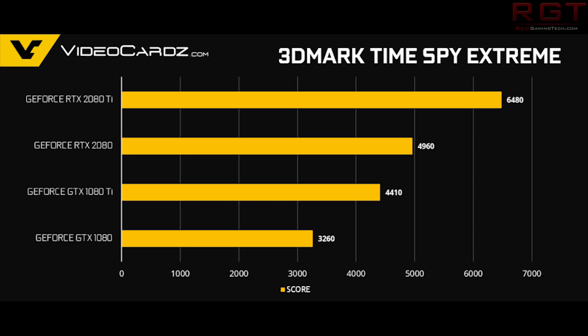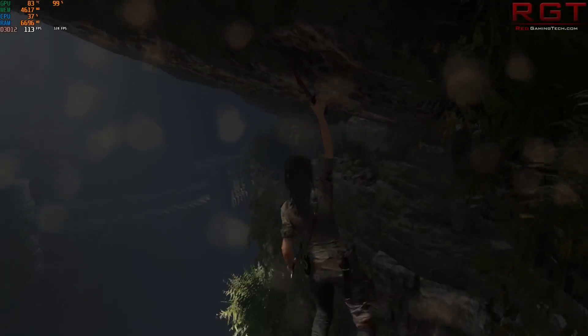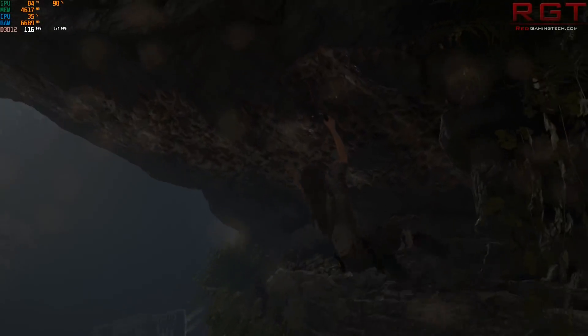That's a pretty nice jump in synthetics, but of course it's synthetics — great if you're chasing leaderboard scores, but if you're trying to play a game it probably won't affect you too much. So what about games? What type of performance impact are you going to be receiving on titles? Let's start with Shadow of the Tomb Raider.